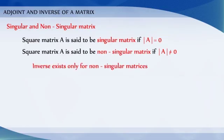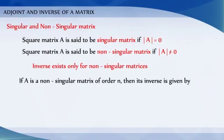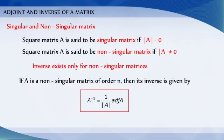The inverse exists only for non-singular matrices. If A is a non-singular matrix, then its inverse is given by A⁻¹ = (1/|A|) × adj A.